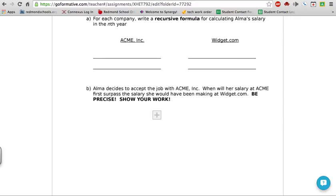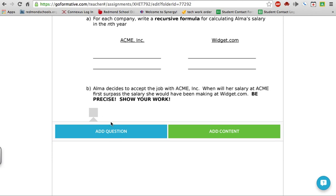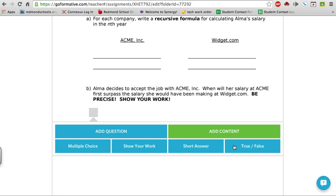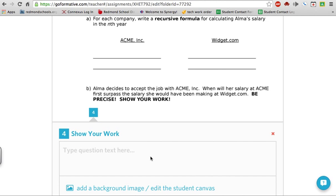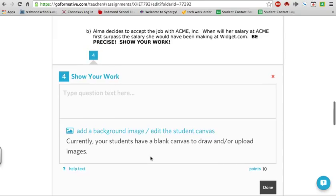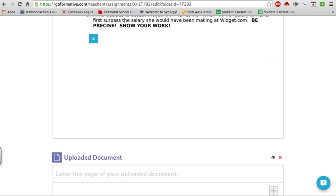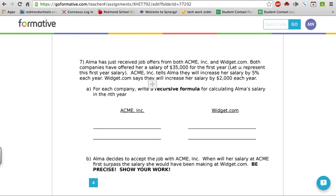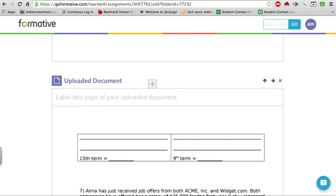Come down here to like this one where you want them to show their work, how they got which company she should choose, Acme or Widget. So I'm just going to click down here and I'm going to add a question. And again, I'm going to give them show your work. And I'm not going to type in anything here. You could, if you wanted to, but it's totally up to you. Again, I could add a background, whatever. So I'm just going to do five points. So you could go through and put in as many questions and content into this as you want. I don't want to waste your time showing you because you can see it's the same process.